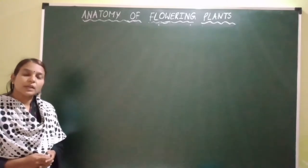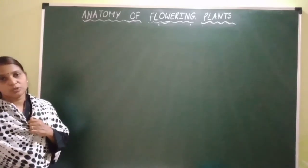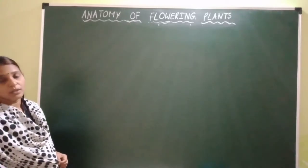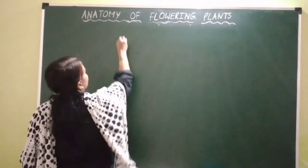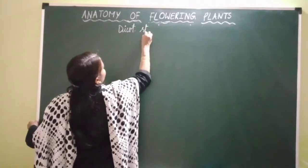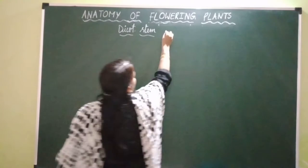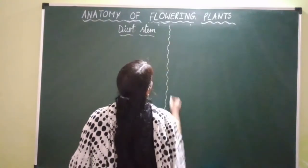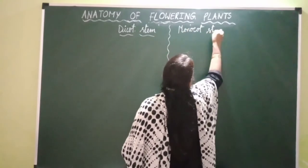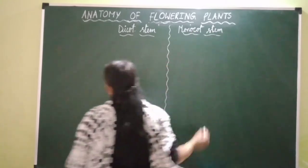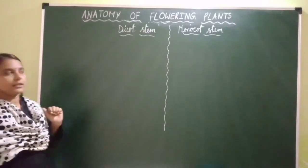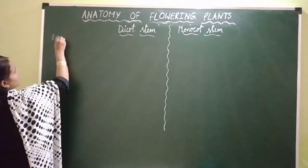Hello students. In the previous videos I explained the transverse section of both dicot stem and monocot stem. Now in this video I am going to explain the differences between dicot stem and monocot stem. Let's study these differences with respect to all the tissues from periphery to center. The first tissue is epidermis.